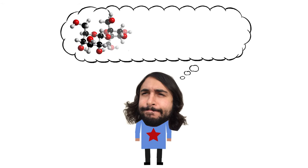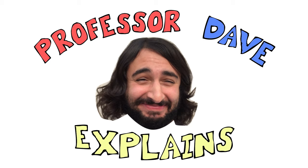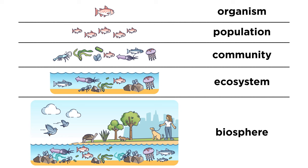Professor Dave Explains. In the introduction to this series, we looked at all the tiers of complexity that an ecologist may study, starting with an individual organism and zooming out to consider the entire biosphere. Let's now take a closer look at all of these tiers one at a time so that we can get a better understanding of what ecologists study, starting at the most fundamental level: an organism.